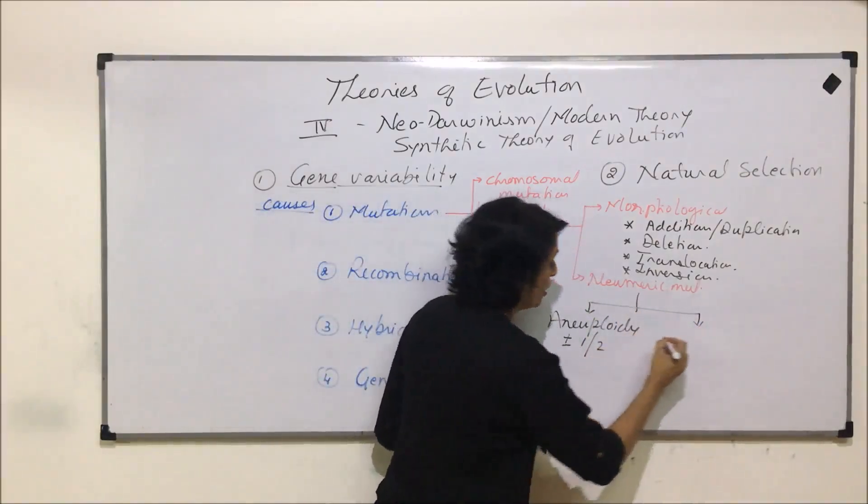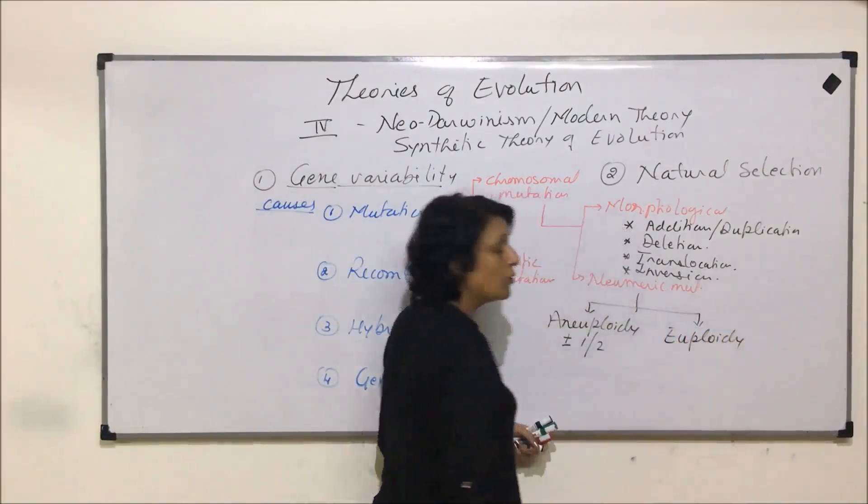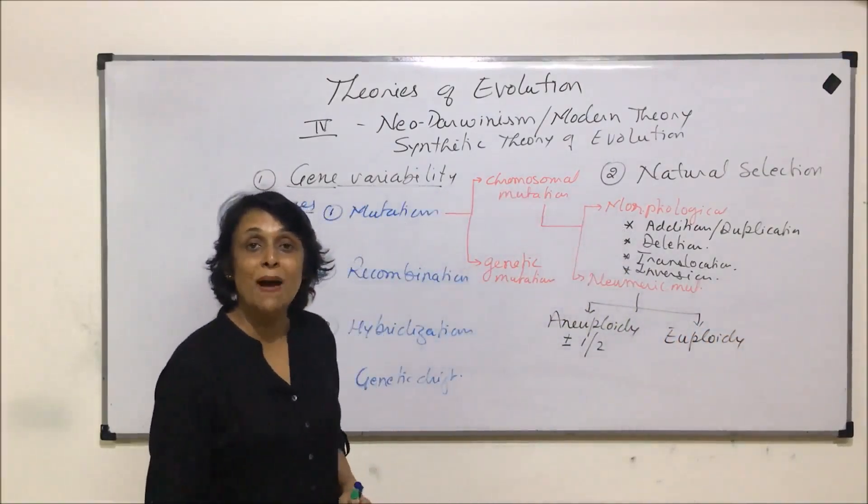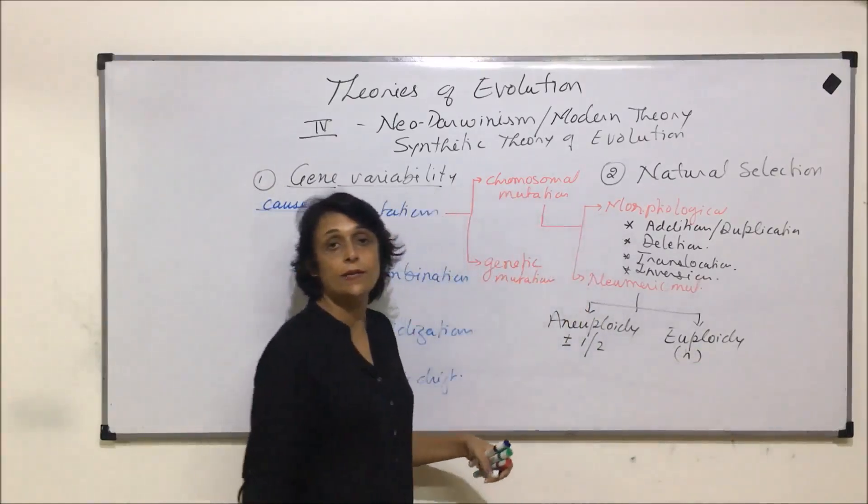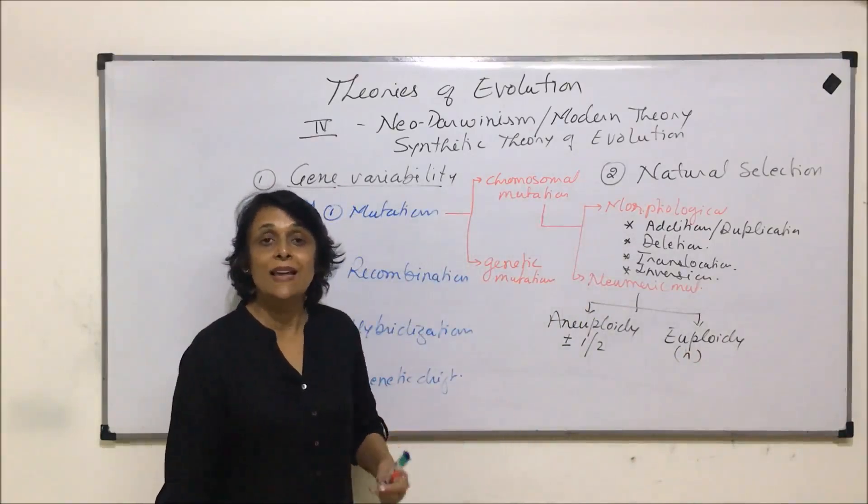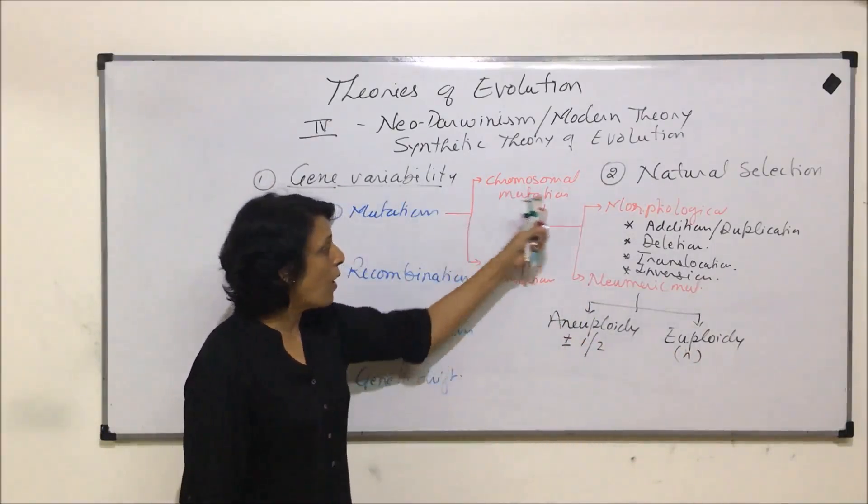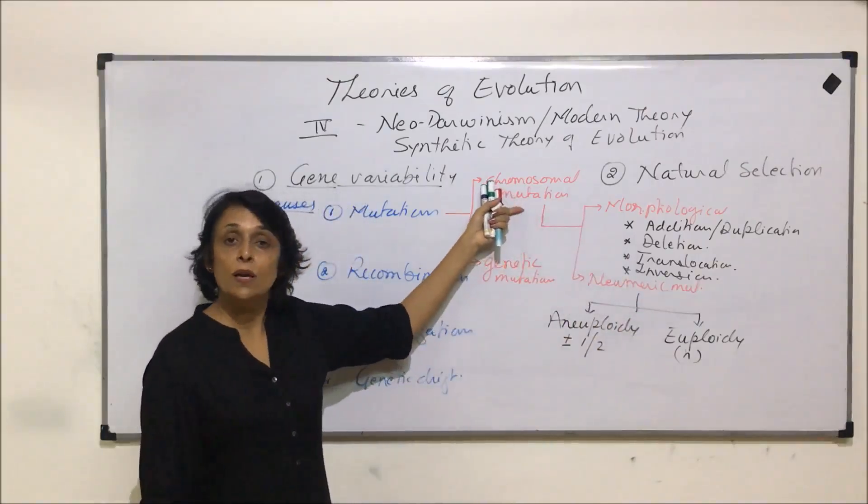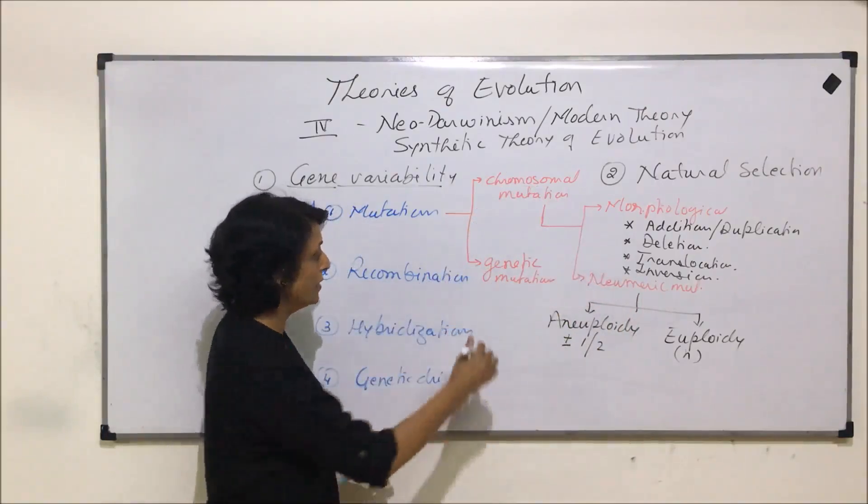Second under numeric was euploidy, where the chromosome number changes by a set. So one set is haploid, two sets means if it gets doubled then diploid, triploid, tetraploid, or polyploid. So all these would come under chromosomal mutations. And as I said, we have already discussed these earlier.